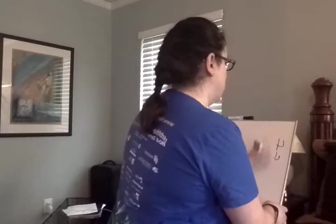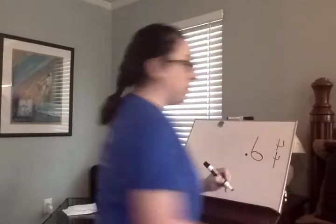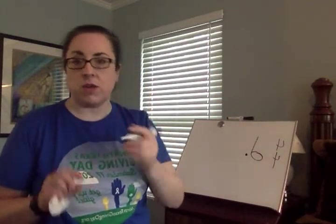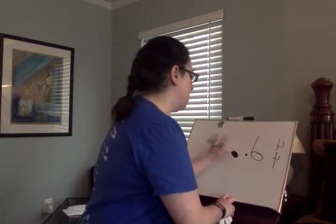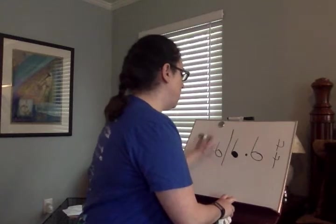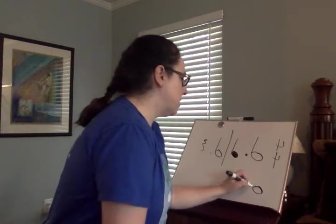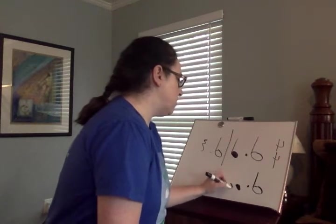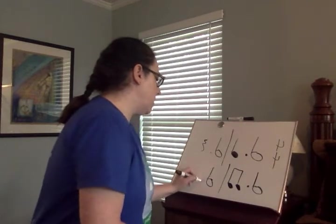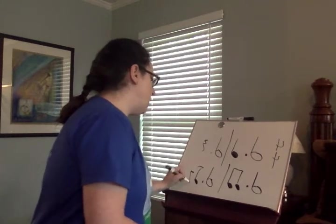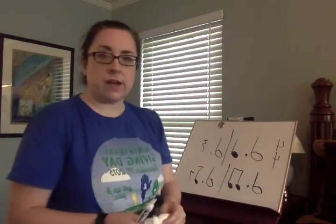So we're in 4/4 time. If we start the measure with the dotted half note, we have one beat left. That remaining count can be filled with a multitude of different kinds of notes or rests. We could put a quarter note, we could put two eighth notes, we could put an eighth note and an eighth rest — and you get the idea.